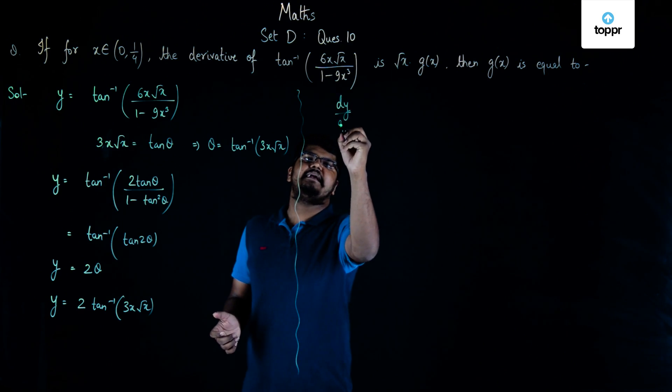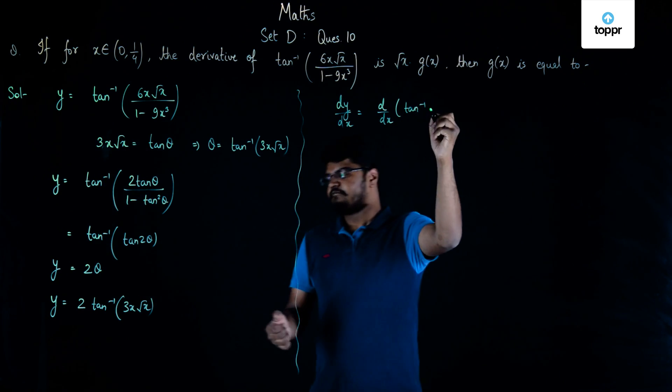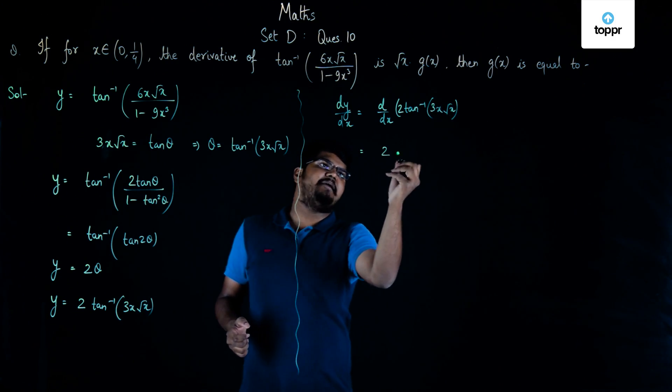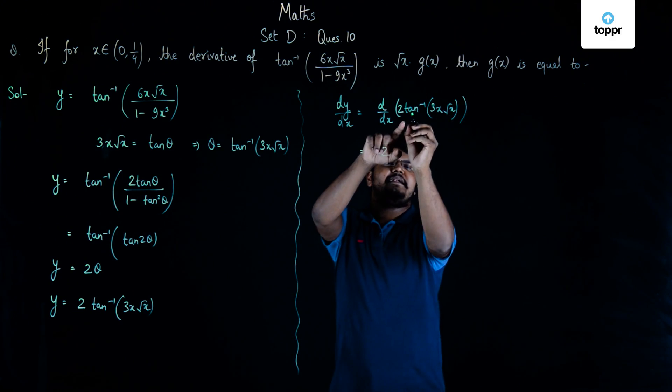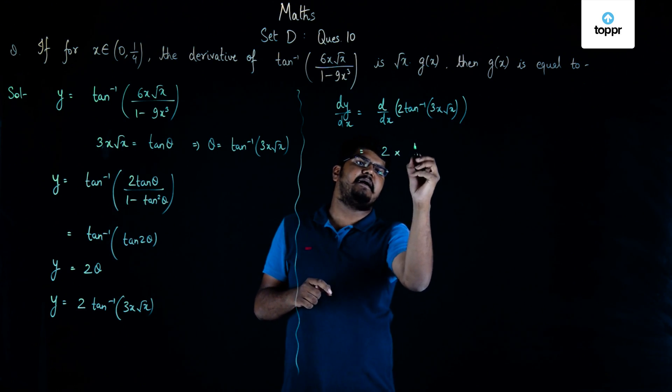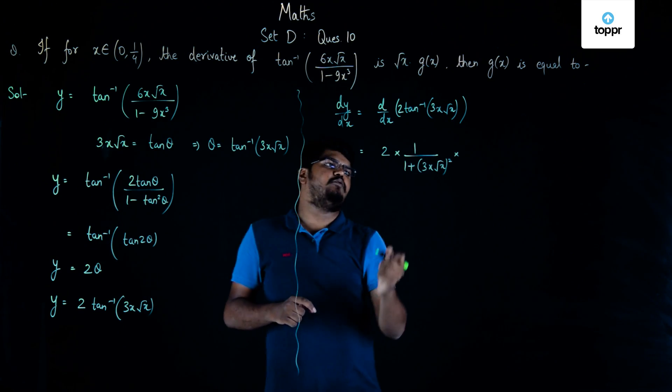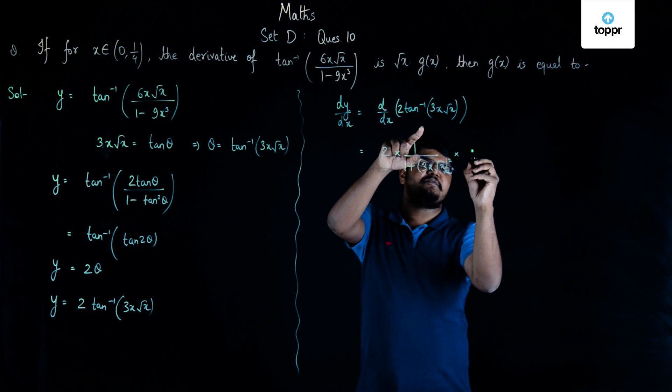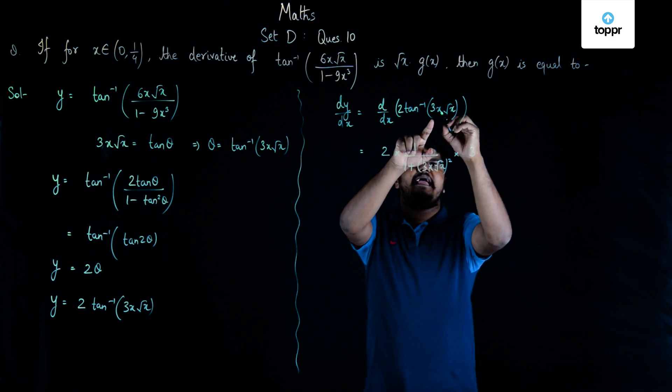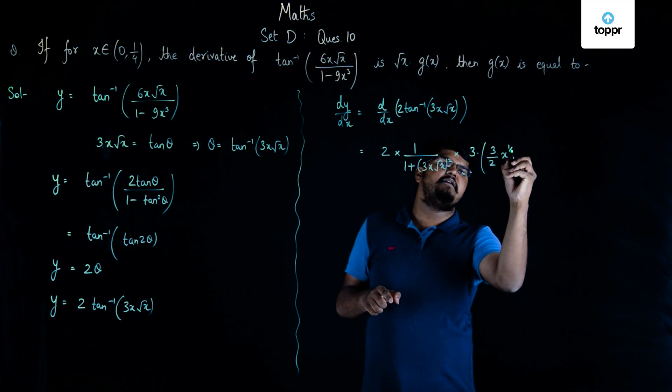We will have dy/dx equals dy/dx of 2 tan inverse (3x√x), which will give us 2 times—now the differentiation of tan inverse x is 1/(1 + x²). In place of x we will consider 3x√x. So it will become 1/(1 + (3x√x)²) into the derivative of 3x√x, which gives us 3 times—the differentiation of x√x or x^(3/2) is (3/2)x^(3/2 - 1) = (3/2)x^(1/2).